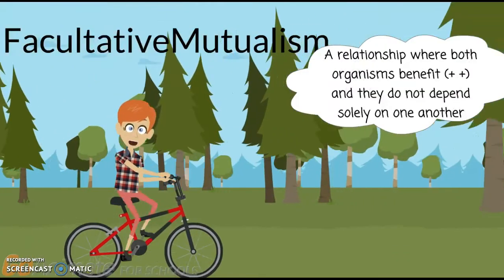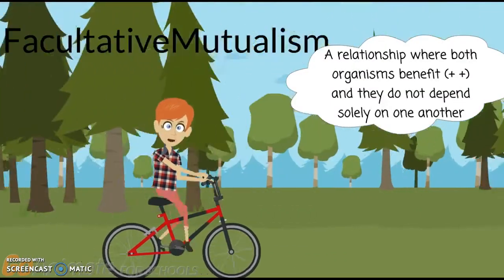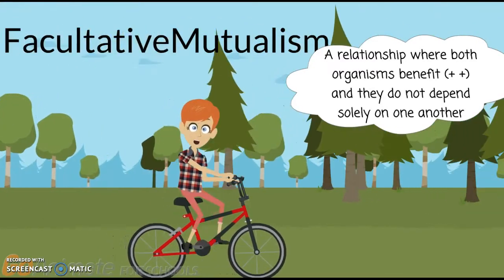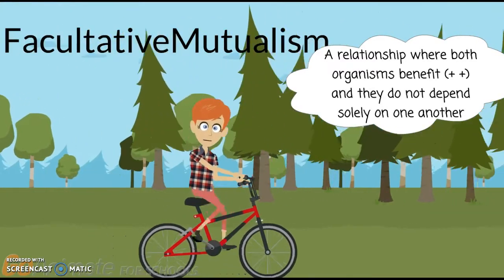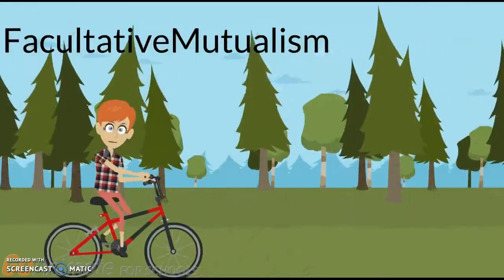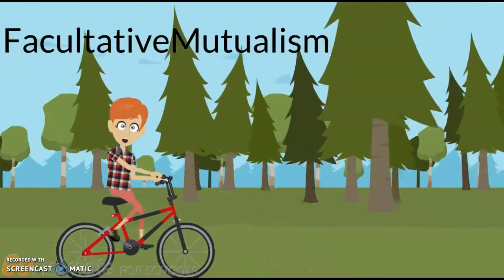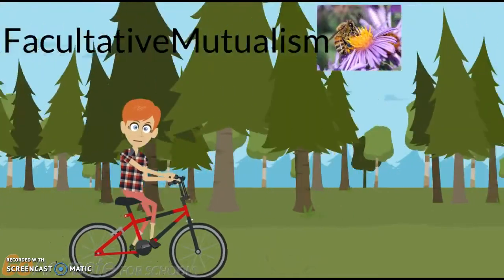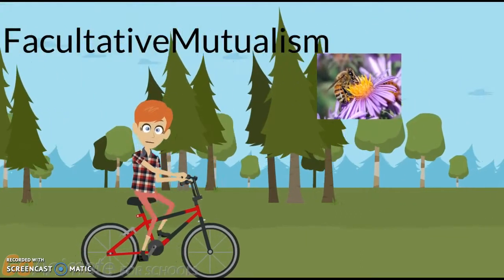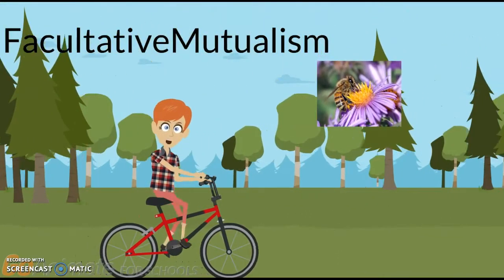Facultative mutualism is a relationship where both organisms benefit. However, these two organisms do not depend solely on one another. In this example of facultative mutualism, the flower benefits from the bee spreading the pollen, and the bee benefits by getting nectar from the flower to make honey.